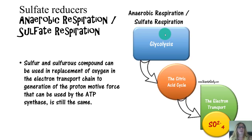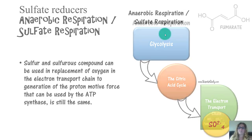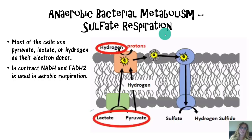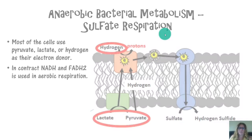Sulfate reducers are another group of anaerobic respirers where some type of sulfur or sulfurous compound serves as the replacement for oxygen as the final electron acceptor. Their electron transport chain looks very different. Most of these cells actually use pyruvate, lactate, or hydrogen as their electron donor to the electron transport chain — in contrast to NADH and FADH2 used in aerobic cellular respiration. The electron carriers are very different in sulfate respiration.